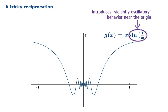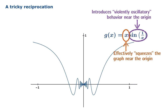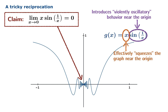The factor of sine 1 over x is going to introduce violently oscillatory behavior near the origin, which we've seen earlier. The factor of x is going to effectively squeeze the graph near the origin. The net result is that the limiting value of this function will turn out to be zero near the origin, despite the oscillatory behavior.